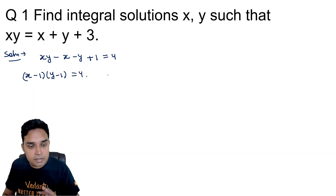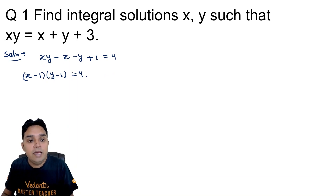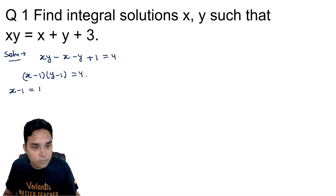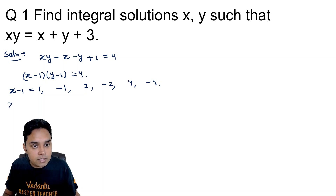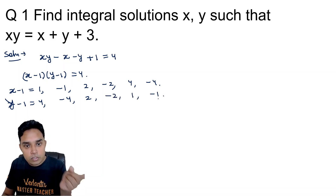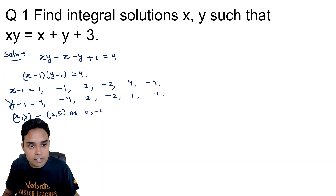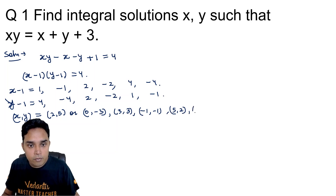Because x and y are integers, x minus 1 and y minus 1 are also integers, so their product equal to 4 will only occur in limited scenarios. x minus 1 can be 1, minus 1, 2, minus 2, 4, or minus 4, and correspondingly y minus 1 will be 4, minus 4, 2, minus 2, 1, and minus 1. Solving for x and y gives solutions: (2,5), (0,−3), (3,3), (−1,−1), (5,2), and (−3,0).